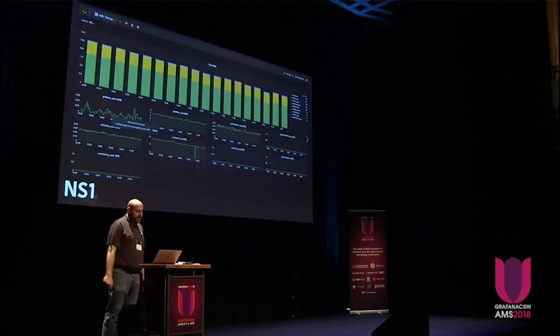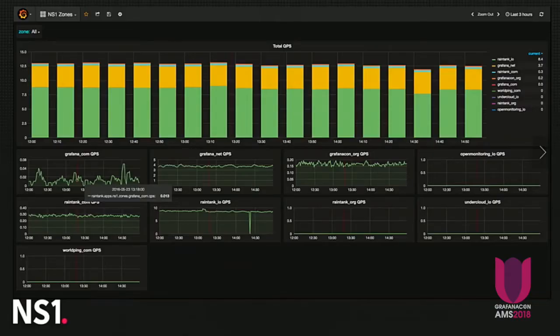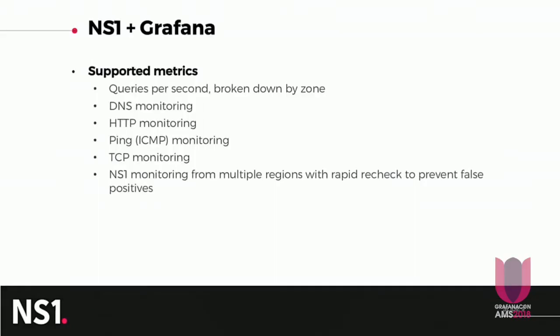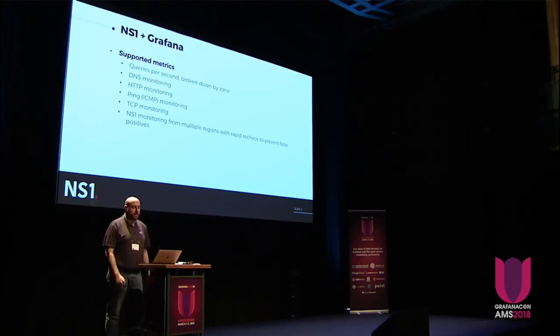What we can do with Grafana is pipe in data from the DNS so that you have real-time information about the number of queries you're experiencing and other monitoring metrics from our own built-in monitors. We support queries per second broken down by zone, as well as monitoring on port 53, port 80 for HTTP, ICMP monitoring, and TCP. For any zones with multiple regions set up, we can initiate a rapid recheck so you can avoid false positives. Having all this information as part of your overall site reliability context allows you to make smarter decisions about how to react to a certain situation and never have to wonder: is it the DNS?